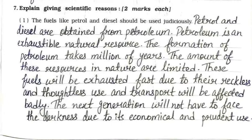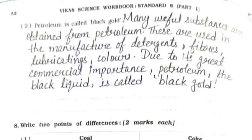Question seven: scientific reasons. Petrol and diesel should be used judiciously because petroleum is an exhaustible natural resource whose formation takes millions of years. Reckless use will exhaust these resources, badly affecting transport for future generations. Petroleum is called black gold due to its great commercial importance — many useful substances like detergents, fibers, lubricants, and colors are obtained from it.